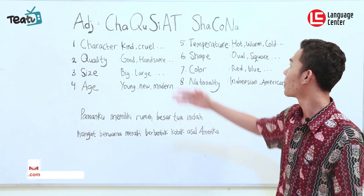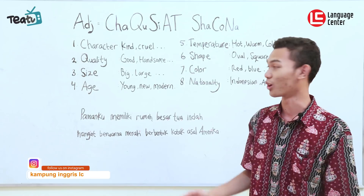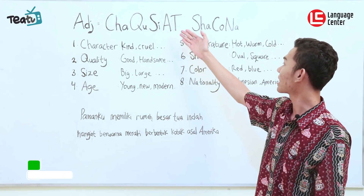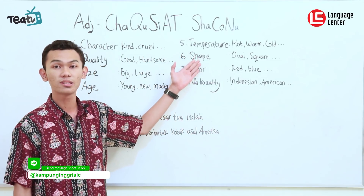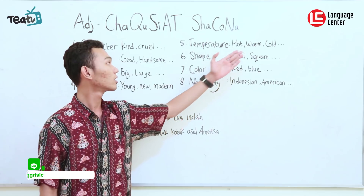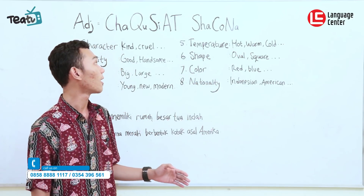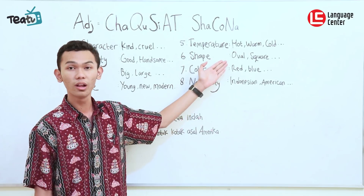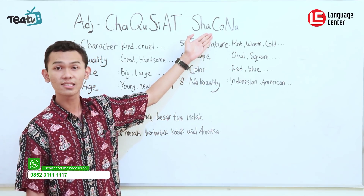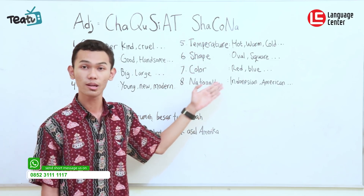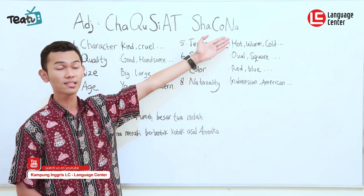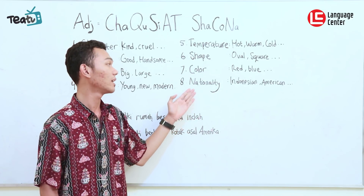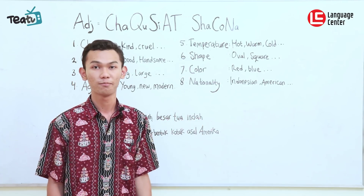Next is K — size, 'ukuran'. For example: big, large, small, and so on. A is for age, 'usia' or 'umur': young, new, modern, old, traditional — these are included in age. Next is N — temperature, or 'suhu': hot, warm, cool, and so on. Next is shape, 'bentuk': oval, square, triangle, and so on. And the last is color — red, blue, black — and nationality, for example Indonesian or American.